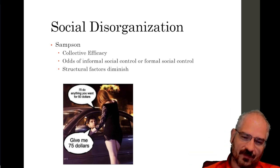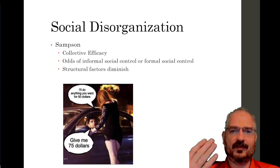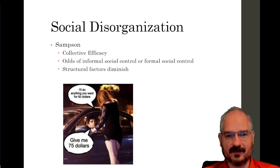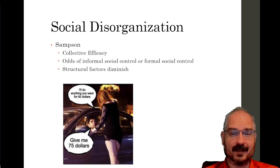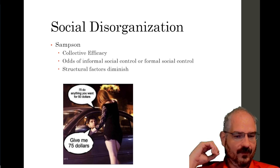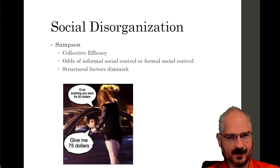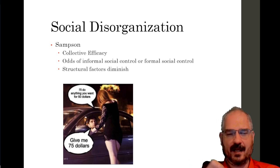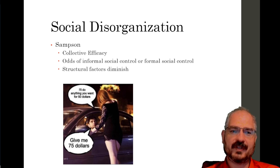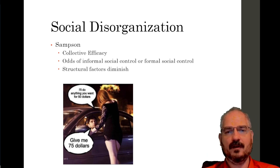Low levels of collective efficacy are where those things just don't happen, can't happen, or happen less often. It's those structural factors that Shaw and McKay identified in zone two — the poverty, dilapidation, heterogeneity, and mobility of residents — that are the pieces that diminish collective efficacy of a neighborhood.